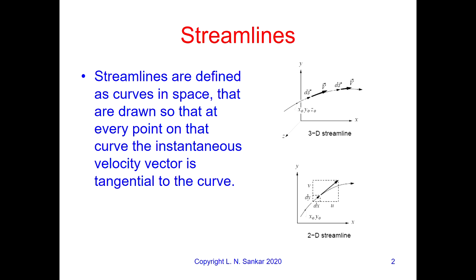It could be 3D or it could be 2D. In 2D, it's a little easier to visualize. If you look at the components of the velocity vector u and v, then the slope of u and v would give the velocity vector direction, and that would be tangent to the streamline.